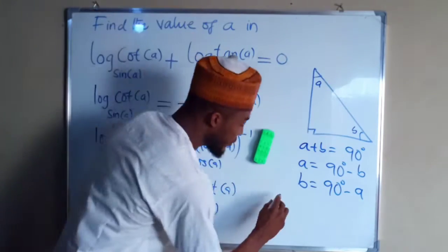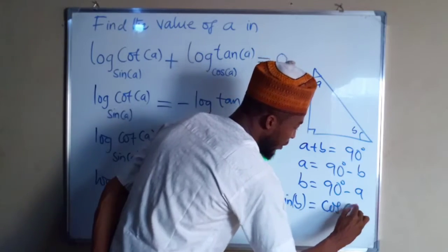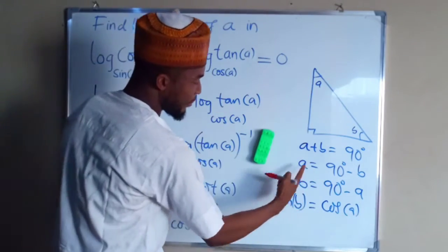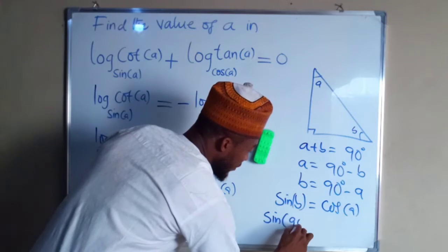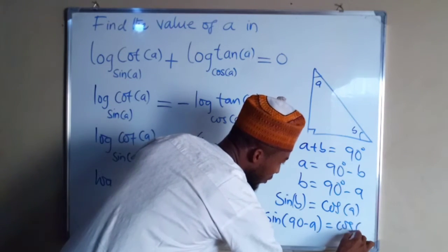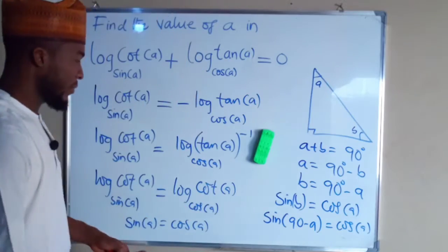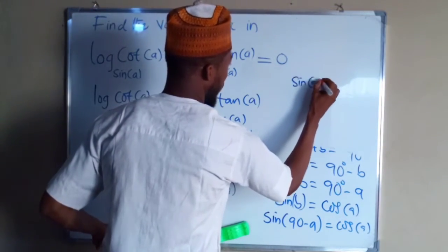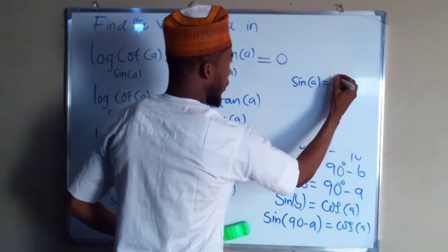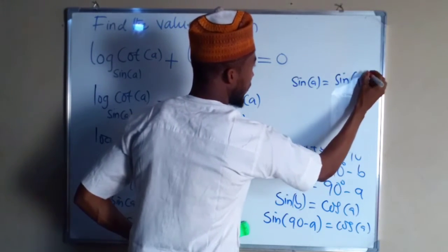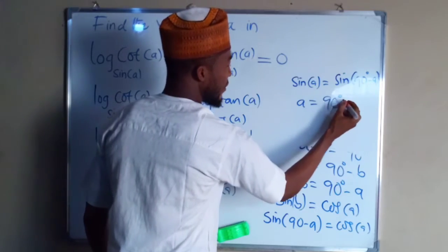For complementary angles, sine of angle B is the same thing as cos of angle A. From here, B is equal to 90 minus A. So we have sine of 90 minus A to be equal to cos of A. Now we can substitute cos A with sine of 90 minus A. Therefore, sine A equals sine of 90 degrees minus A, which shows that A equals 90 degrees minus A.